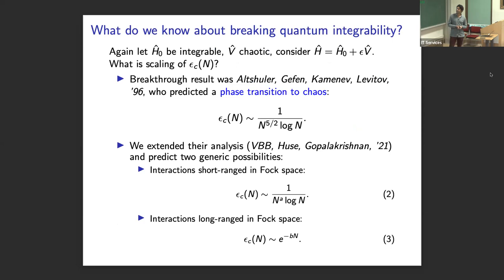So now let me turn to the quantum problem, for which there are no rigorous results, but what we do have are physical pictures. And the breakthrough result was this paper by Altshuler, Geffen, Kamenev, and Levitov in 1996, who predicted that chaos in a particular model. So to be precise, they took a two fermion quantum dot and perturbed it with random four fermion interactions. And they predicted this specific scaling form of the threshold perturbation strength to chaos. And this is actually what's now known as a many-body delocalization transition, for those of you familiar with it.